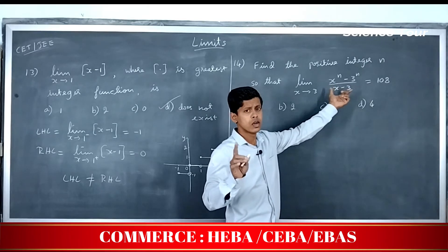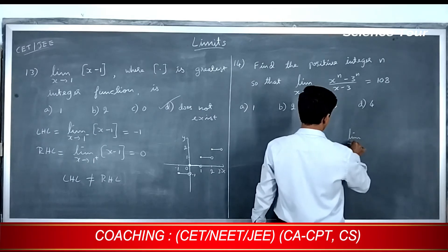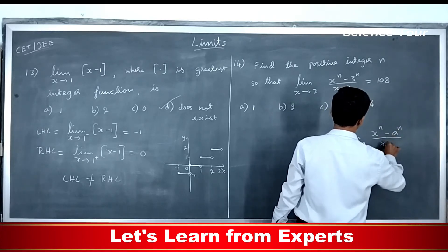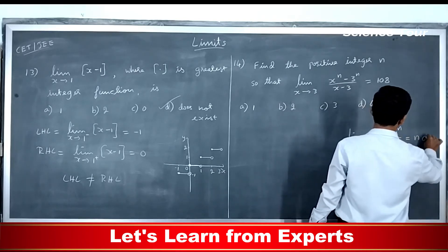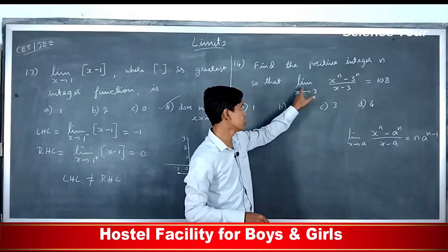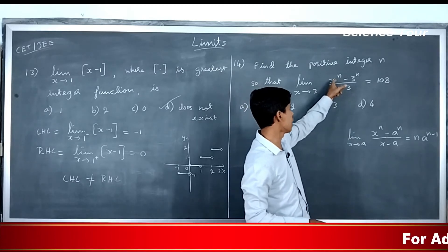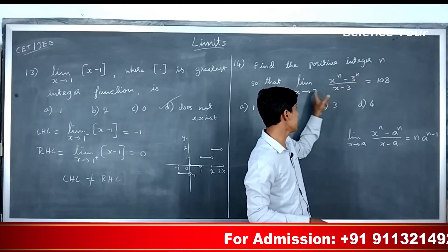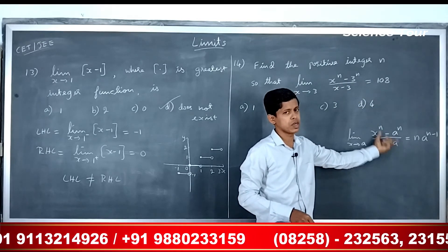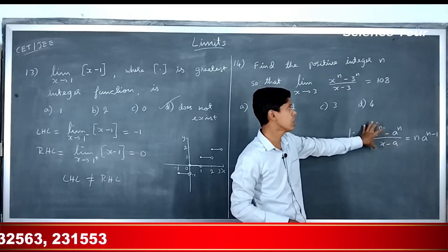So let us move to the 14th question over here. You have an expression which is of the form limit x tends to a, x to the power n minus a to the power n divided by x minus a, whose answer is n into a to the power n minus 1. So that is the formula we must use here. So you have got limit x tends to 3 which means a is 3, and here you have x to the power n minus a to the power n because a is 3. So a is 3 and x minus 3, that is x minus a. So it is perfectly matching the formula, the left hand side of the formula.